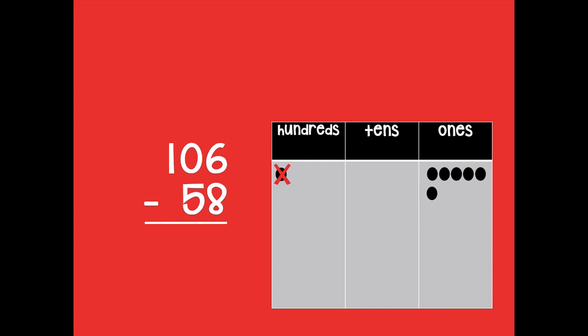So we can do all of this unbundling at one time instead of having to do it step by step. We're gonna take this hundred, unbundle it into 10 tens, but then we know we need one of those tens to make 10 ones. So now that hundred has turned into 9 tens and 10 ones.